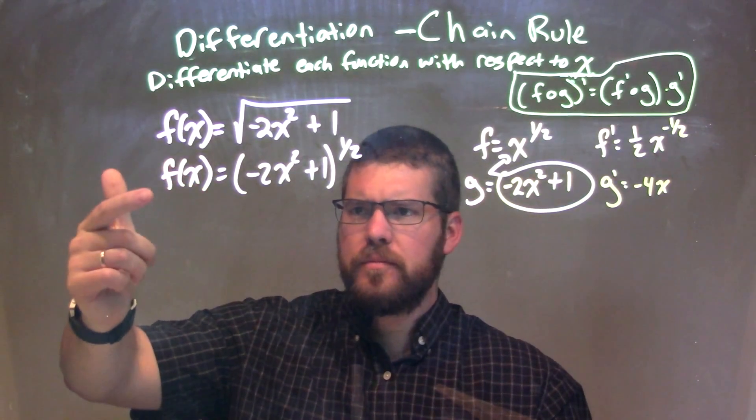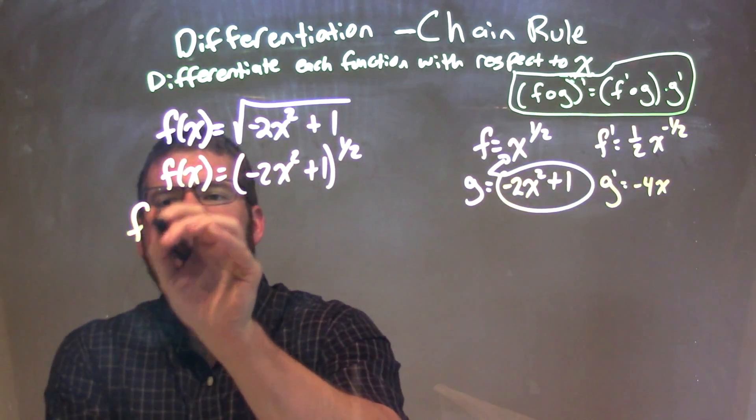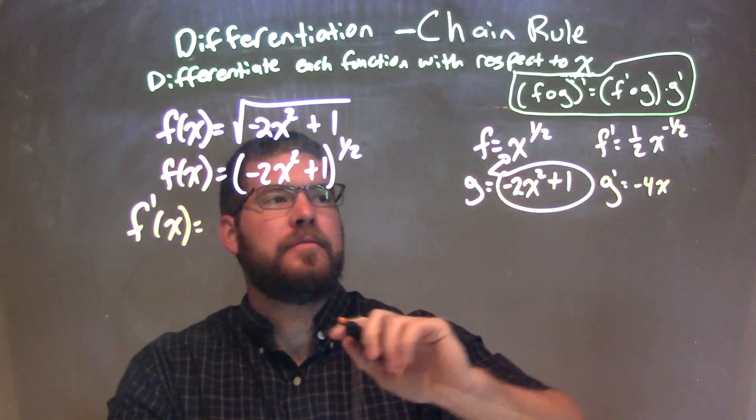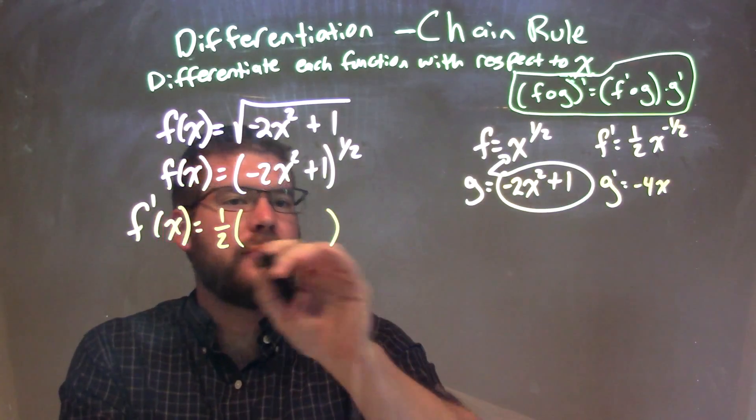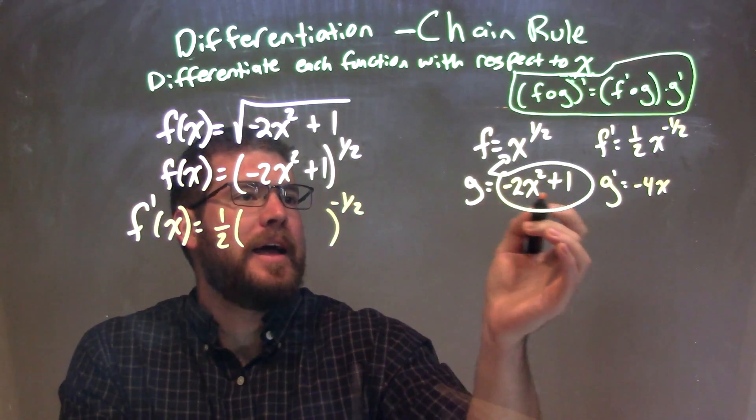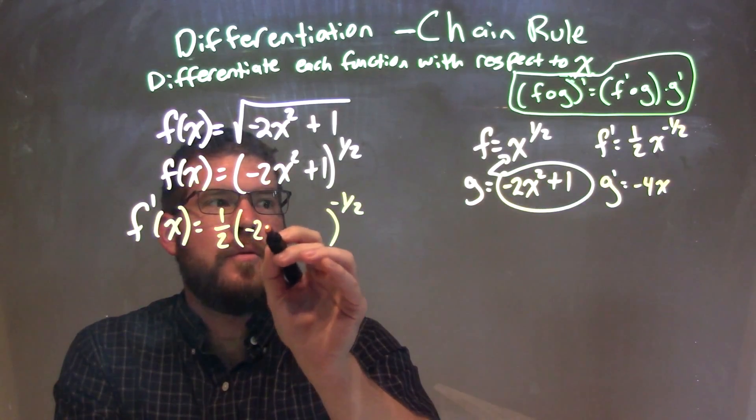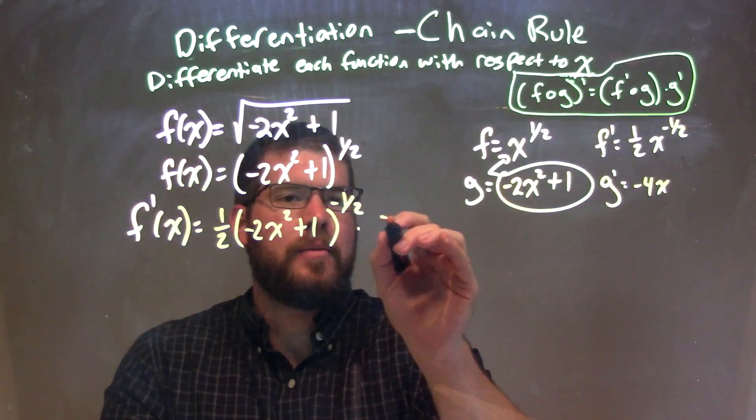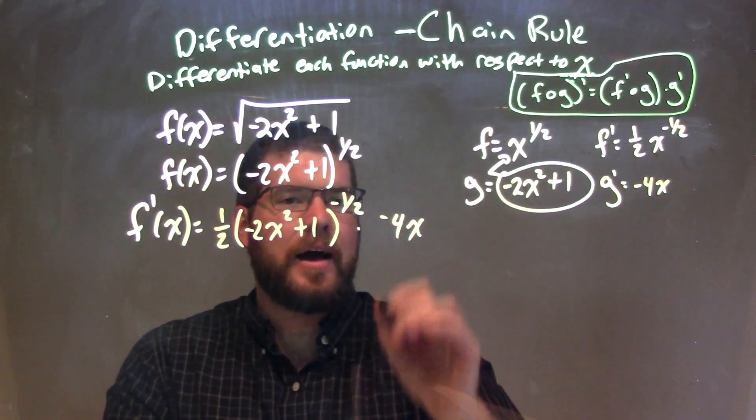So when I take my derivative, my f prime of x, I need to find f prime of g. f prime being 1 half x, so I'm going to leave a parentheses there, the negative 1 half power. And g is negative 2x squared plus 1. And that's going to be multiplied by my g prime, which is negative 4x.